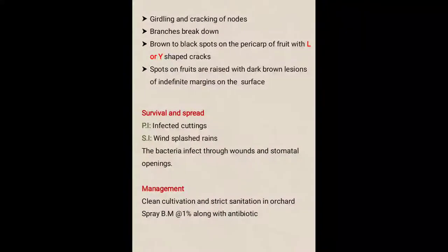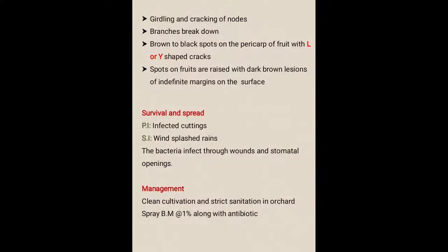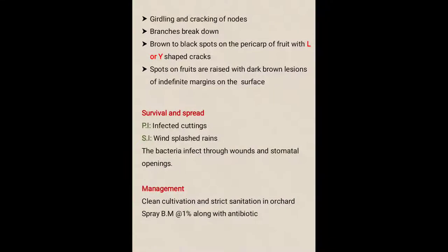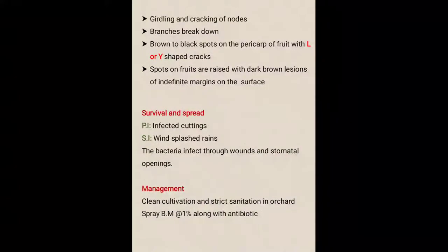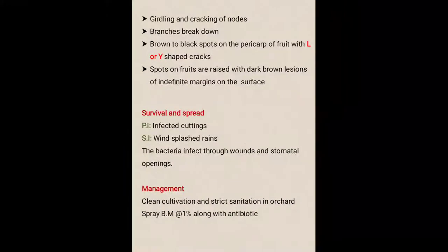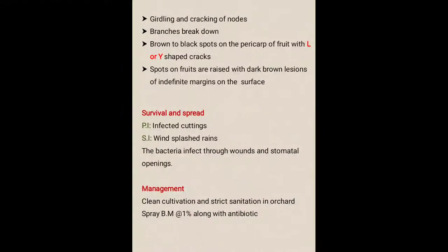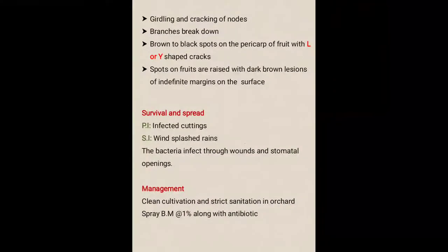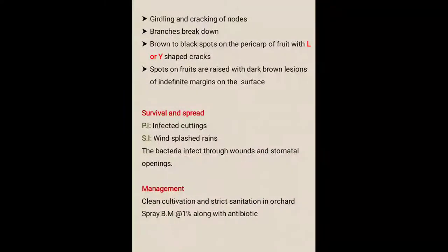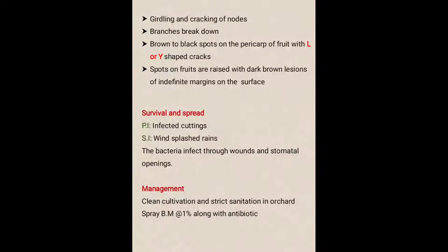Divide the water quantity — 50 liters in one container and another 50 liters in another container. Add 1 kg copper sulphate in the first 50 liters of water, and in the remaining 50 liters of water add lime. After mixing properly, transfer both the contents into a third container and the Bordeaux mixture will be ready for use.